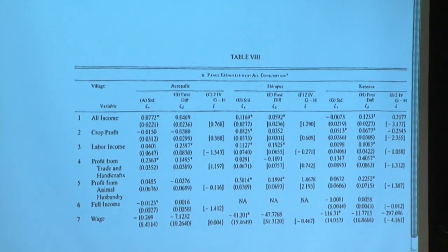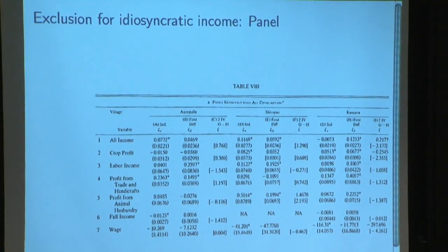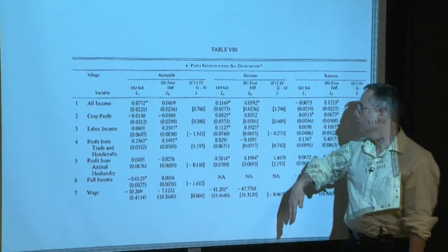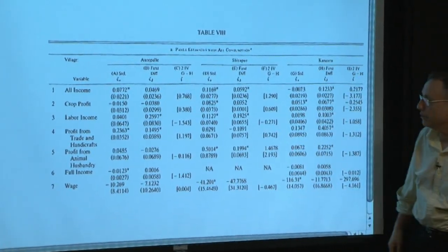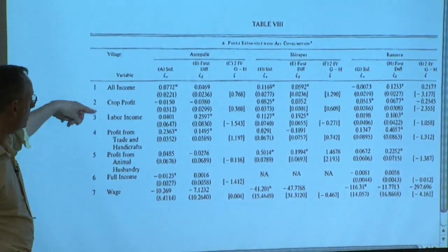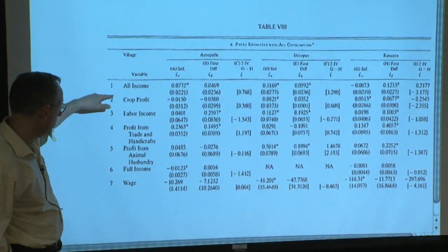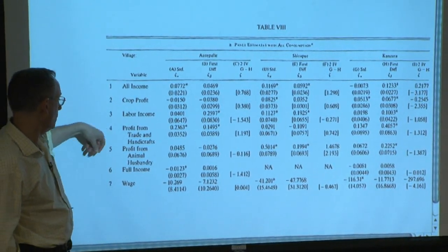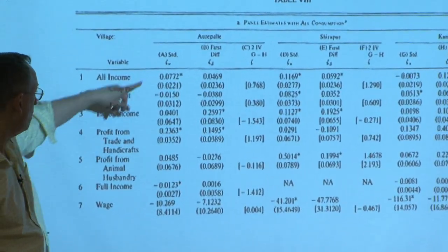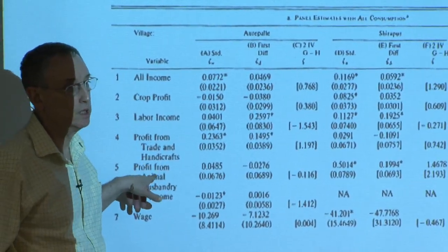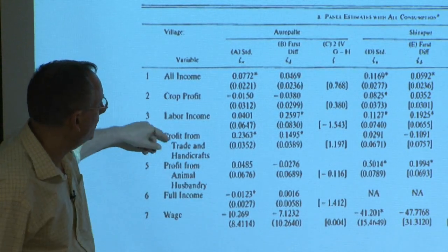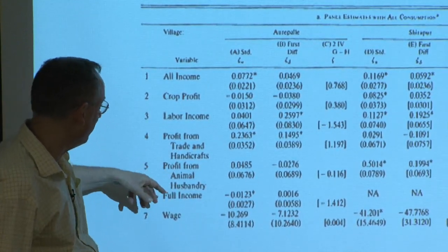With the panel, we did it three different ways: standard, first difference, Hausman, and estimated. We're picking up coefficients on various sources of income, none of which should be positive and significant, but some of them kind of are. For example, the highest number is profits from trade in handicrafts in Arupali — they're climbing palm trees, tapping, making toddy liquor. And it's not insured, evidently.